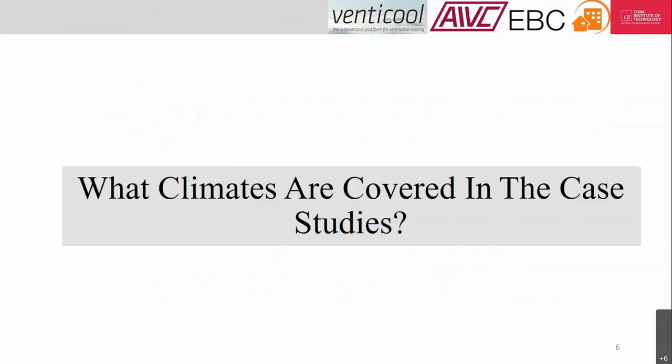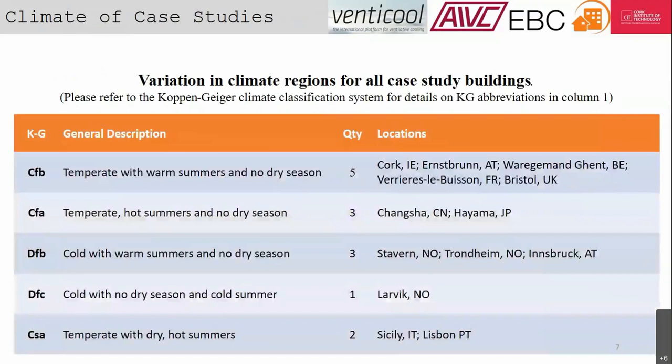We had quite a number of case studies: 14 well-documented buildings in total. About 10 of our cases were in temperate climates using the Köppen-Geiger classification, and about 4 were in cold climates. Unfortunately, we had no hot climates in our analysis. We still got a spread of different types of summers — warm summers, hot summers — and whether we had dry seasons or not, giving us five different climate classifications where data was collected from.